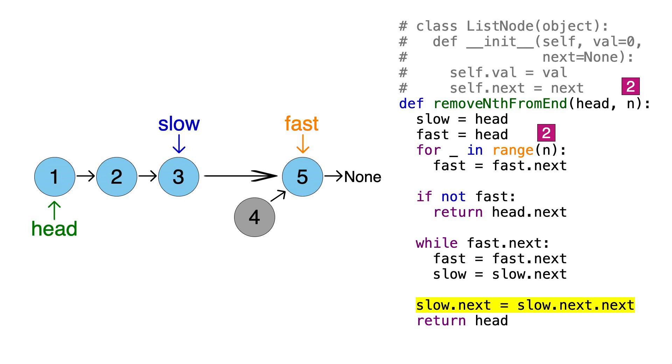Now notice that we haven't actually deleted node 4. It's still pointing to node 5. However, it's now no longer possible to reach node 4, since there's no way to move backwards from node 5. Because of this, Python's garbage collector will automatically delete node 4, since there are no more references to that node. In languages like C or C++, you may have to delete that node manually, but we don't have to worry about that in Python.